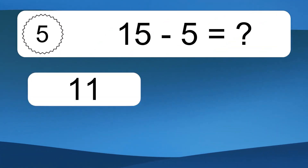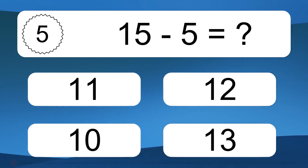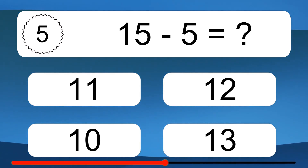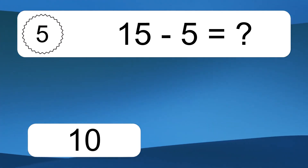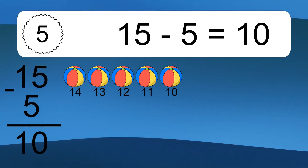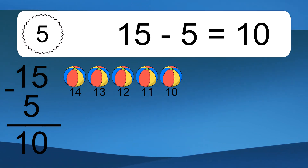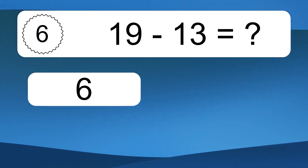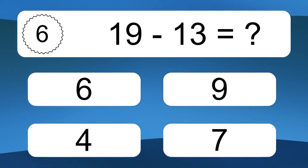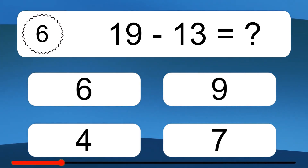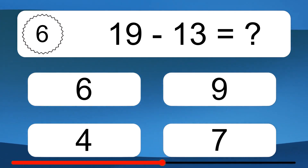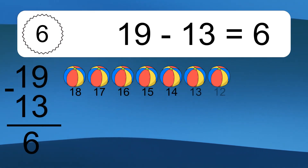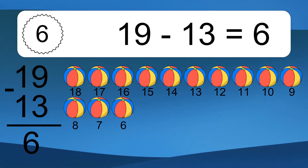15 minus 5 equals what? 15 minus 5 equals 10. Let's count it: 14, 13, 12, 11, 10.